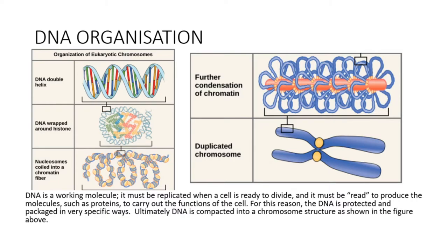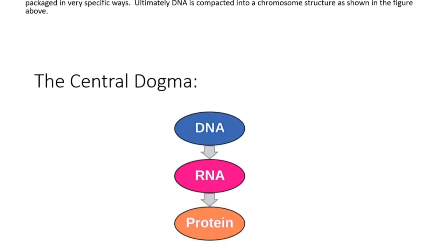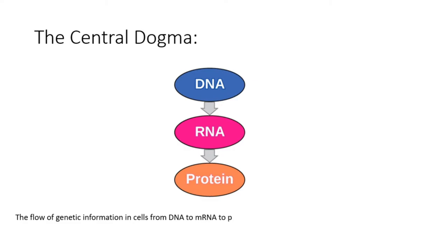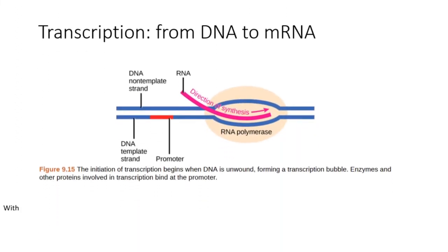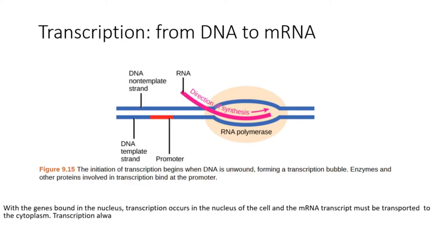For this reason, the DNA is protected and packaged in very specific ways. Ultimately, DNA is compacted into a chromosome structure as shown in the figure above. The flow of genetic information in cells from DNA to mRNA to protein is described by the central dogma, which states that genes specify the sequences of mRNAs, which in turn specify the sequences of proteins. With the genes bound in the nucleus, transcription occurs in the nucleus of the cell, and the mRNA transcript must be transported to the cytoplasm.